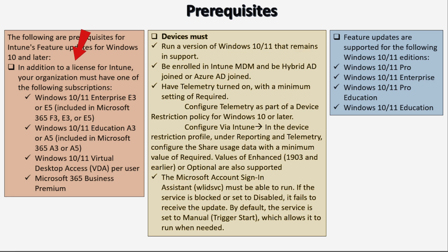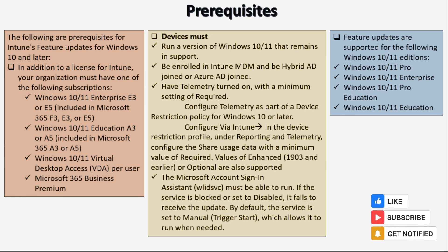They should either have Windows 10 or 11 Enterprise E3 or E5 license, which is part of Microsoft 365 F3, E3, or E5 subscription; or they have Windows 10 or 11 Education A3 or A5 license, which is part of Microsoft 365 A3 or A5 subscription; or they have Windows 10 or 11 Virtual Desktop Access per user; or they should have Microsoft 365 Business Premium.